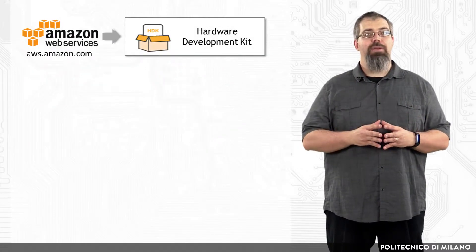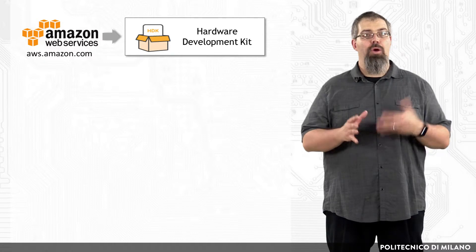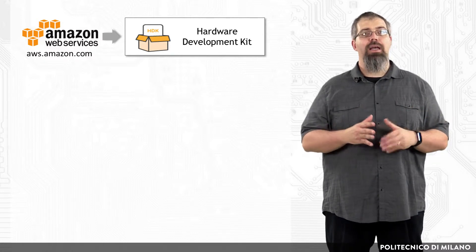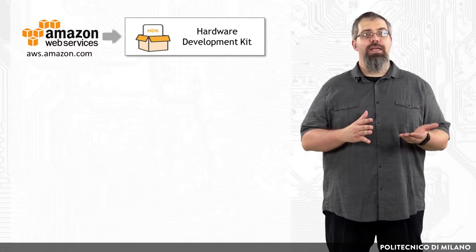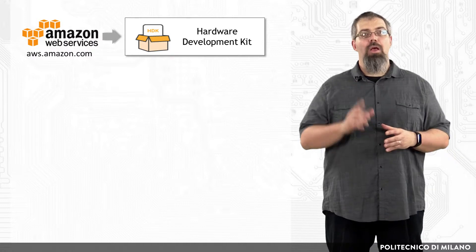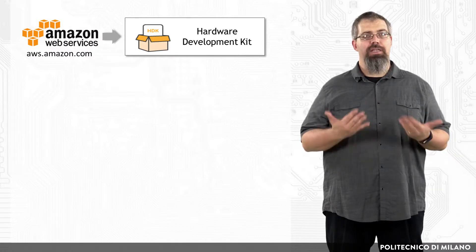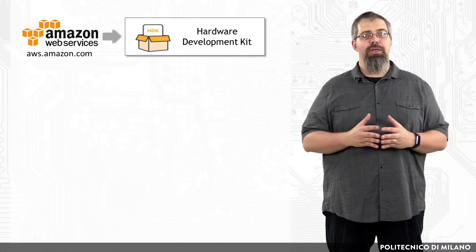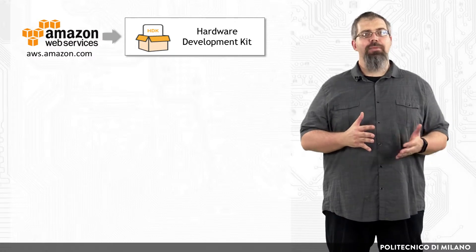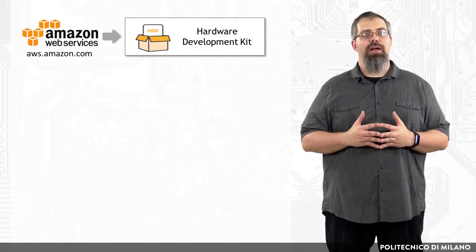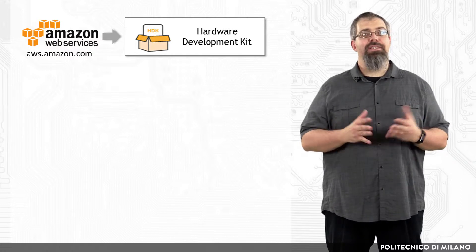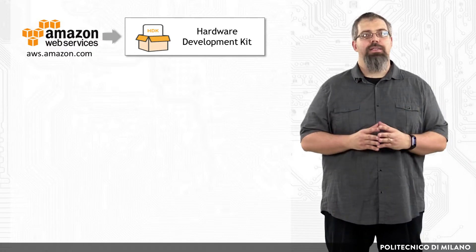Going back to our AWS case, first of all, you have to set up an AWS account or log in, if you already have one, at aws.amazon.com. Once logged in, we do have to start to develop our design to create the Amazon FPGA image, and this can be done by accessing the AWS hardware development kit, which provides access to the necessary tools, scripts and files.